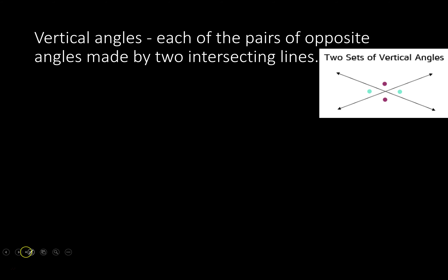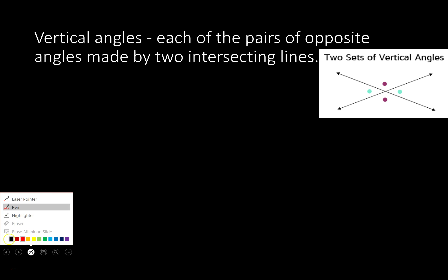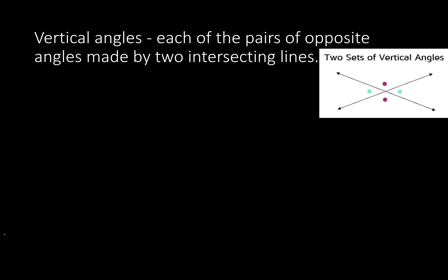Vertical angles — each pair of opposite angles made by two intersecting lines. So these two angles would be congruent, and the outer ones are also congruent. These two and these two are the vertical angles, and they are congruent.